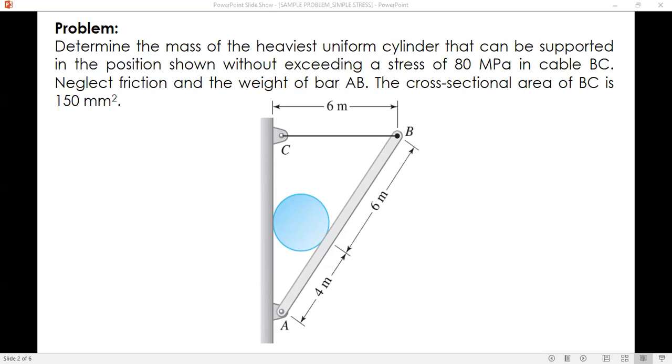What is asked is the mass of the heaviest uniform cylinder. The given quantities are stress of cable BC which is 80 megapascals allowable stress, and the cross-sectional area of BC which is 150 mm². Using the stress formula, we can solve for the force of BC given the stress and area. We will draw the free body diagram of the cylinder and also the free body diagram of bar EB and identify the forces.